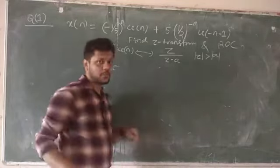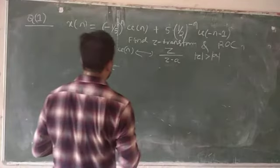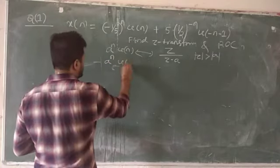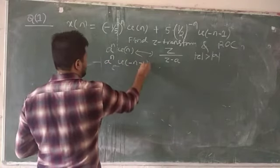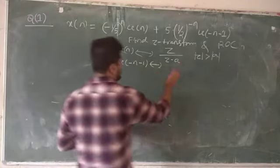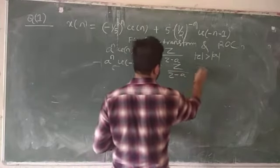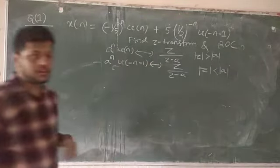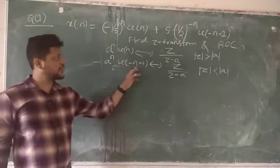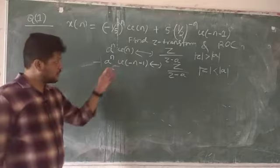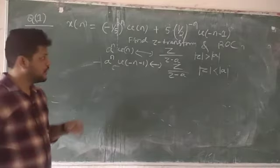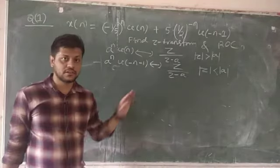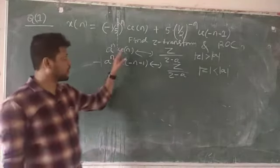We also know that −a^n·u(−n−1) has the same Z-transform z/(z−a), but the ROC represents inside the circle. u(−n−1) is a non-causal signal — it exists only for negative values of n. For n = 0 or any positive n, the whole expression becomes 0. For the causal part u(n), the ROC is outside the circle.